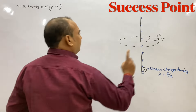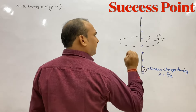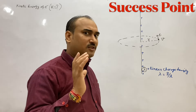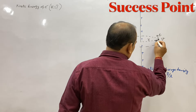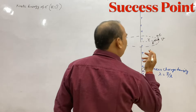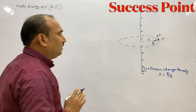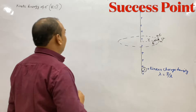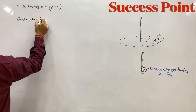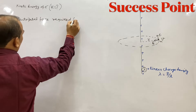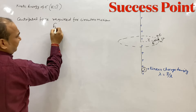बच्चों, इस electron की kinetic energy पता करनी है। पहले सोचें कि जब यह electron चारों तरफ revolve कर रहा है, तो किसी भी body के circular motion के लिए एक centripetal force चाहिए — towards the center। बिना centripetal force मिले कोई object circular motion कर ही नहीं सकता। तो centripetal force required for circular motion: F_c = mv²/r।